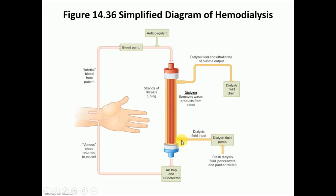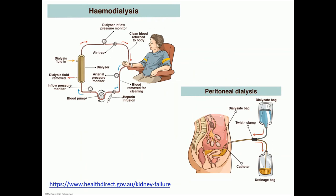In hemodialysis, blood is pumped from the patient through a filter. An anticoagulant is added to prevent clotting. Dialysis fluid is pushed through a separate pump and collects the waste products, then is drained. The filtered blood passes through an air trap to remove air bubbles and is warmed before being returned to the patient through a venous line. There are two different ways hemodialysis can be performed, one of which is through the blood vessels.